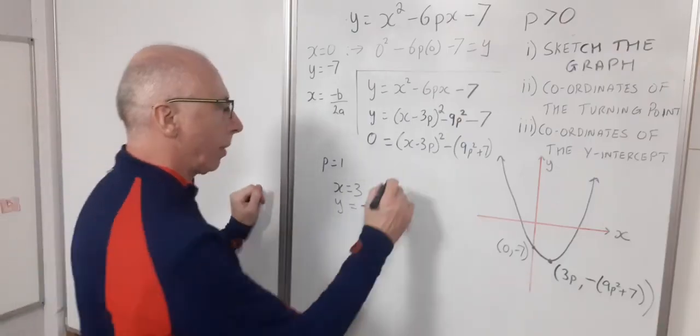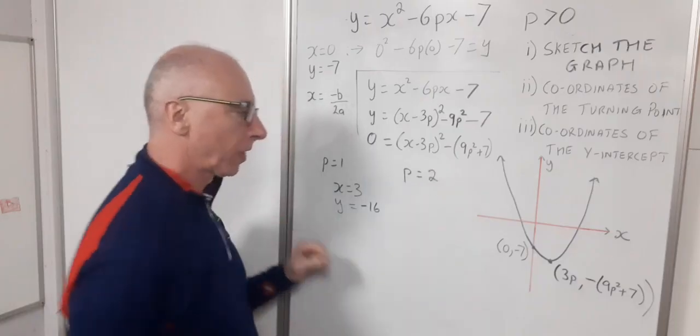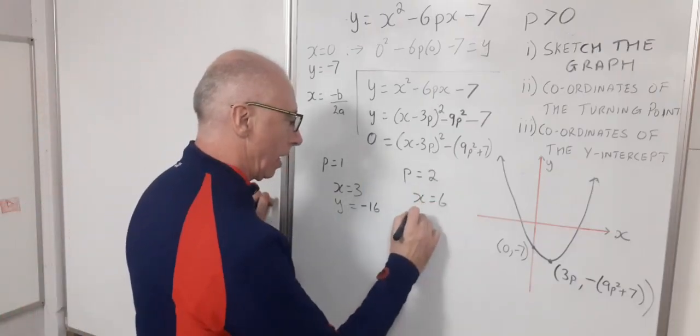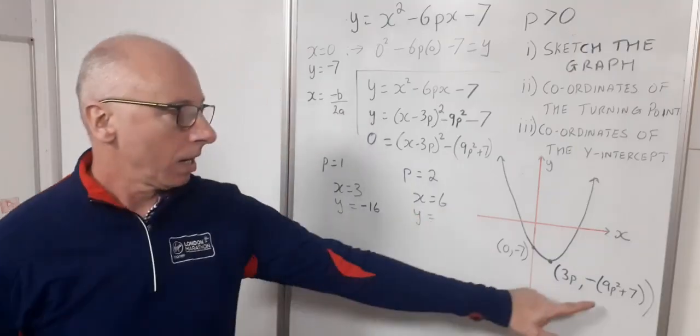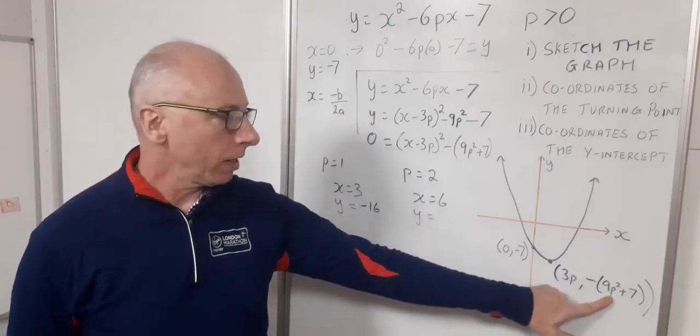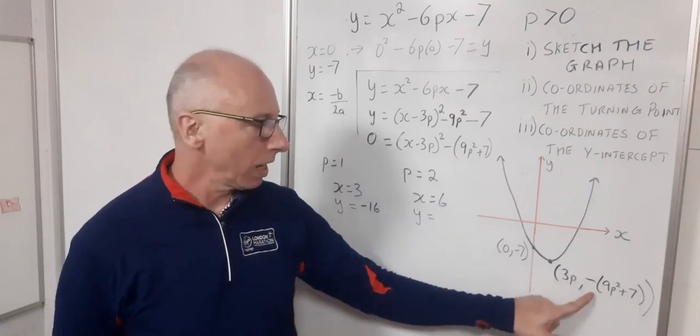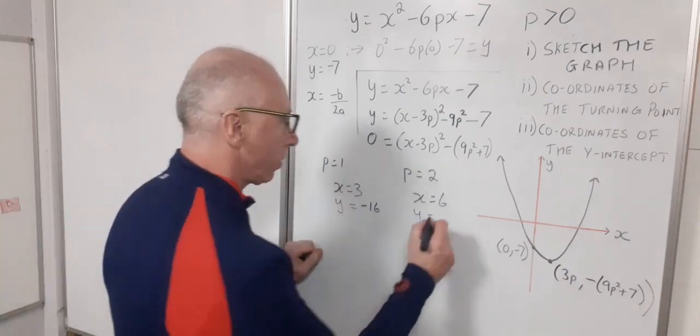And another example, just to finish this off, p equals 2. My x would be 6. And my y would be 9 times 2 squared, which is 9 times 4, which is 36. Plus 7 is 43. And with this minus sign, I've got minus 43.